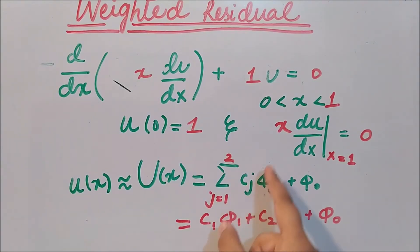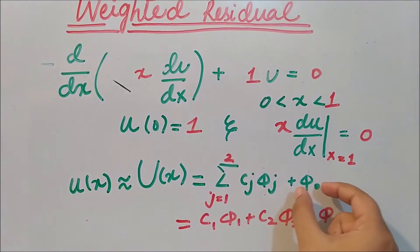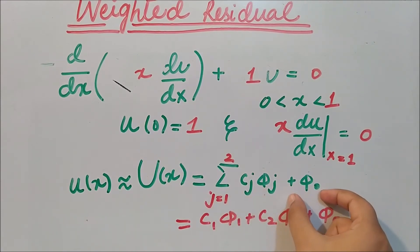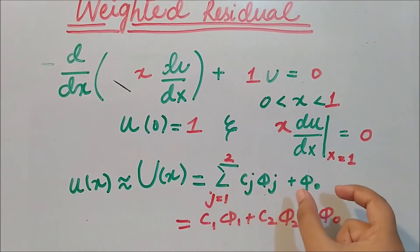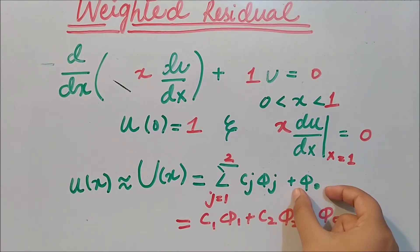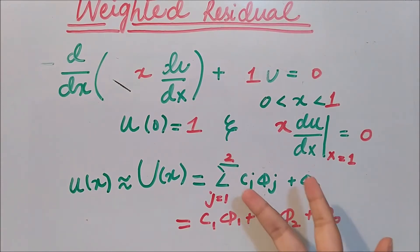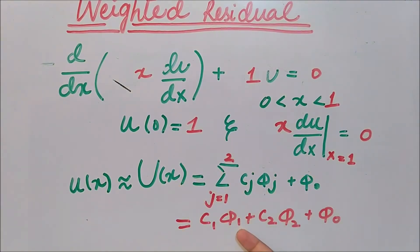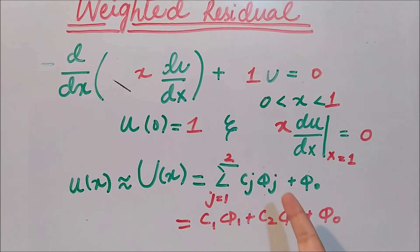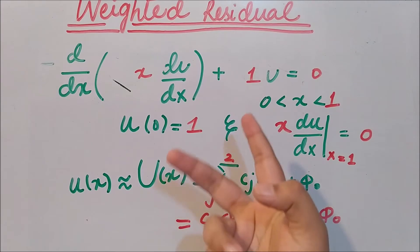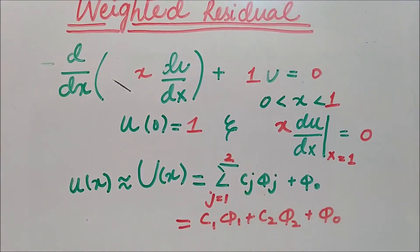There are two parts here: the first part is known as the homogeneous part and the second is the non-homogeneous part. This relates to the boundary conditions — φ1 and φ2 should satisfy the boundary conditions in homogeneous form, while φ0 should satisfy them in the non-homogeneous form.